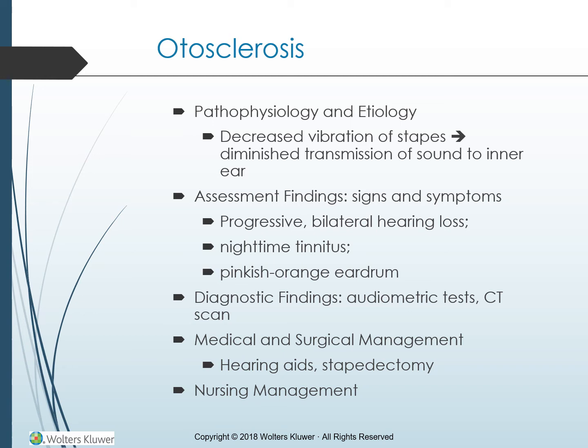If surgical treatment is selected, a stapedectomy is performed on the ear most affected. In this procedure, all or part of the stapes is removed and a prosthesis is inserted that can vibrate the oval window. Once the stapes is replaced, the client experiences an immediate dramatic improvement in hearing. Hearing temporarily diminishes after surgery due to swelling but eventually returns. Complications include displacement of the prosthesis, continued hearing loss, infection, dizziness, and facial nerve damage. Depending on the outcome of surgery, the procedure may be repeated for the opposite ear.